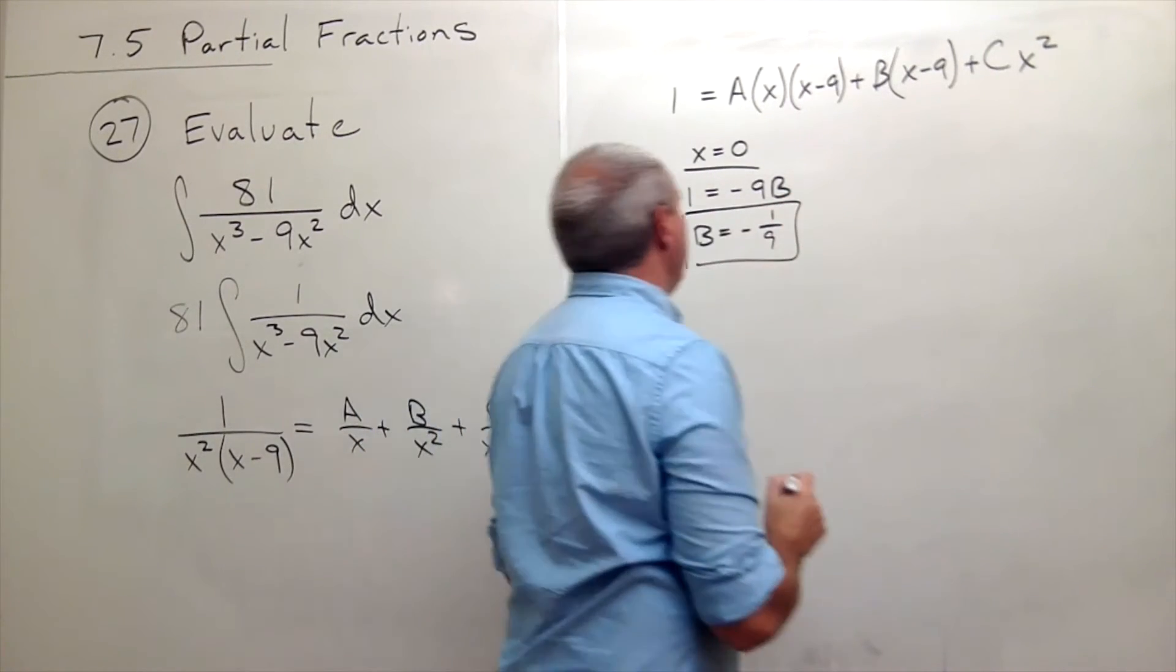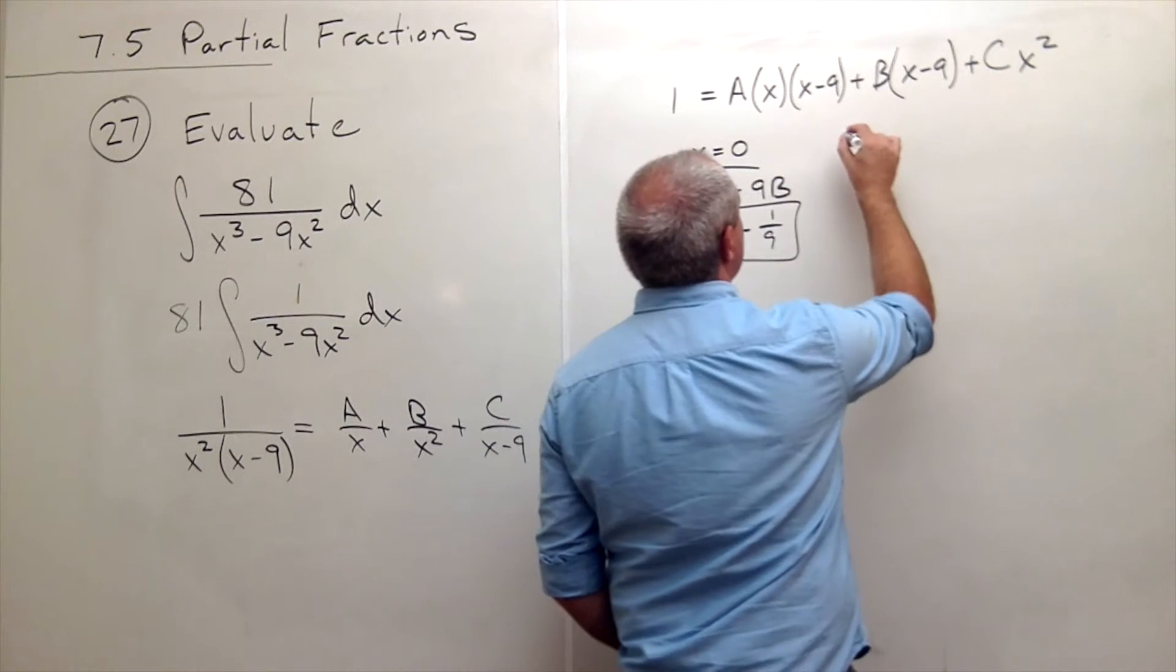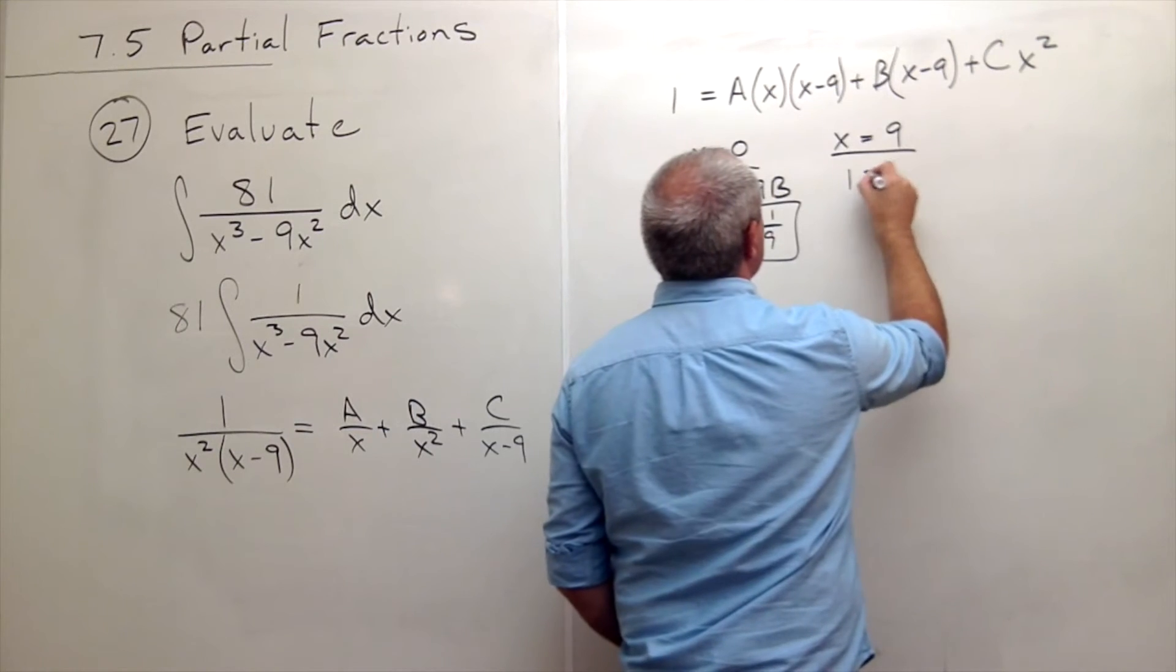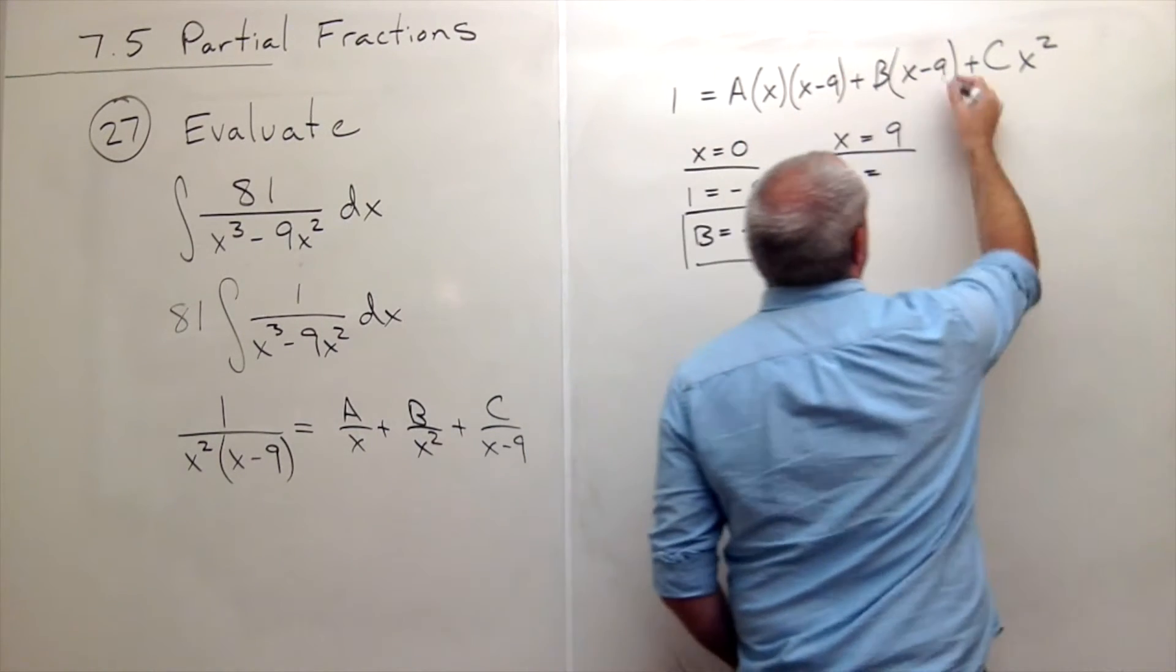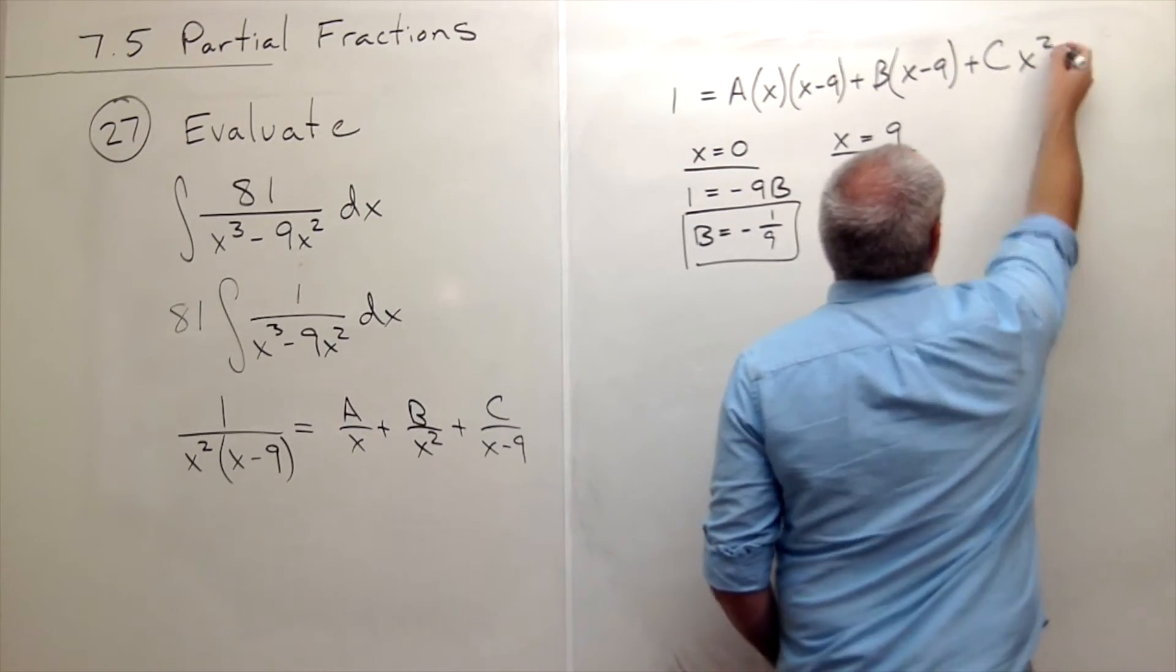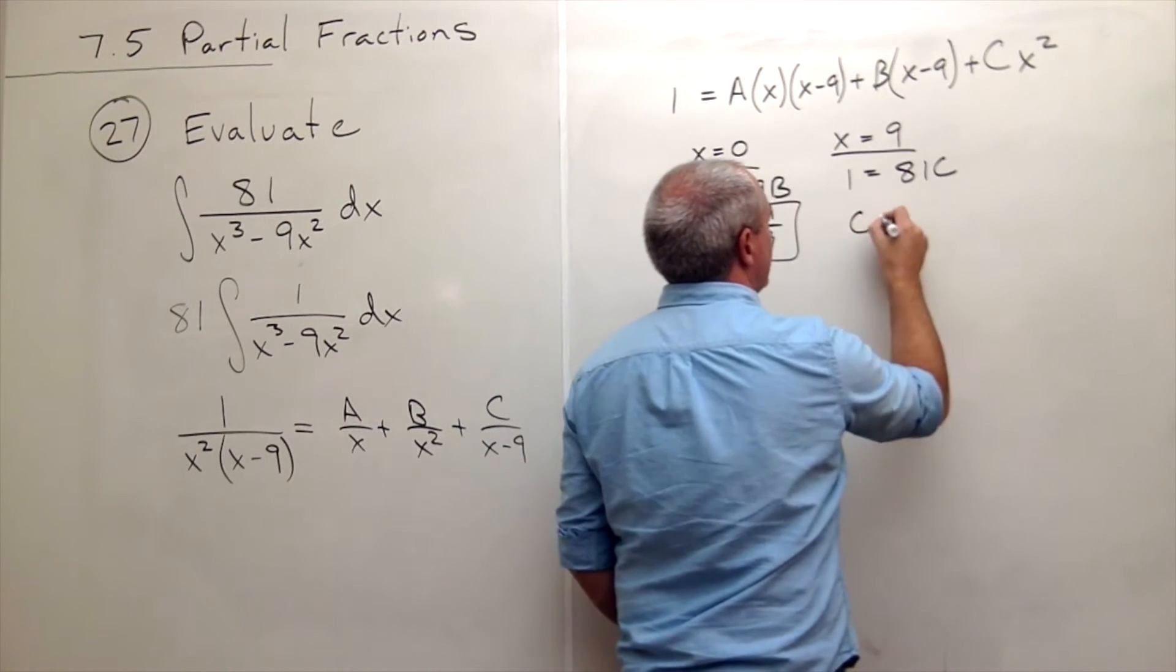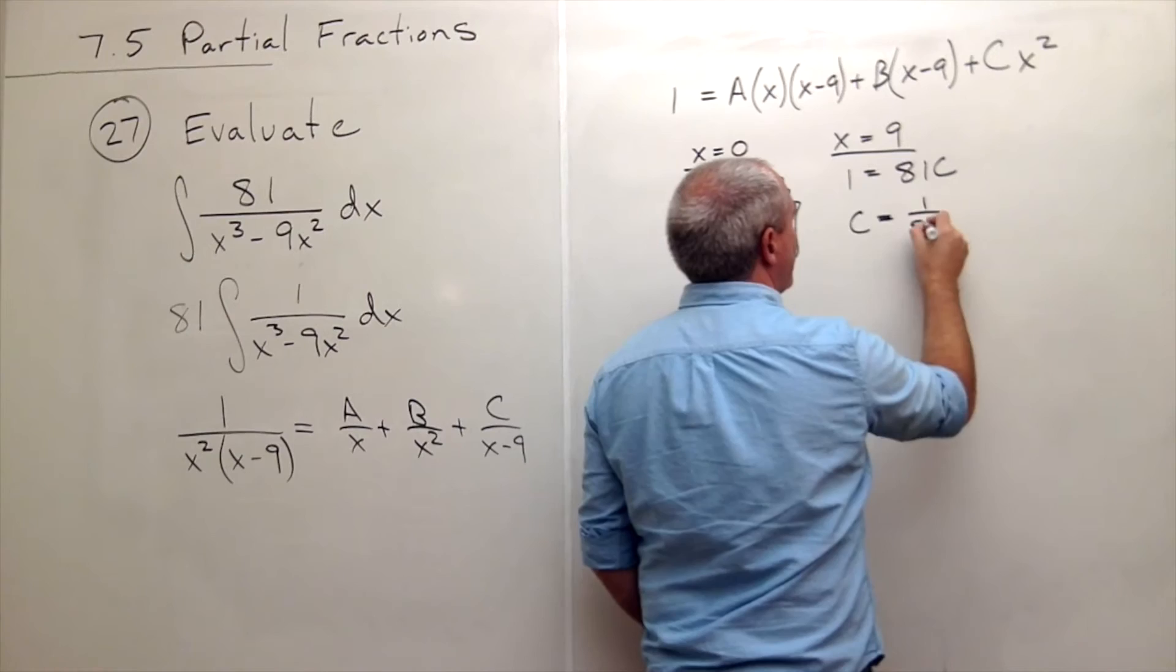Then if x is equal to 9, I get 1 is equal to, that's 0, that's 0, and I get 81C. So C is 1 over 81.